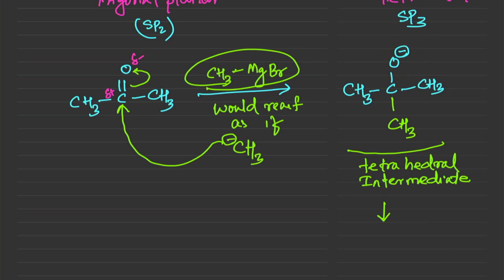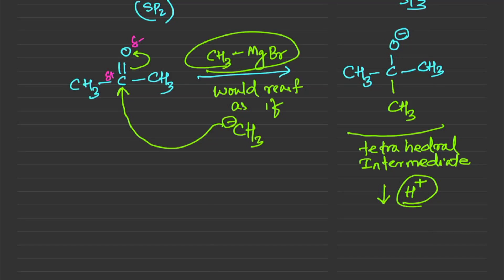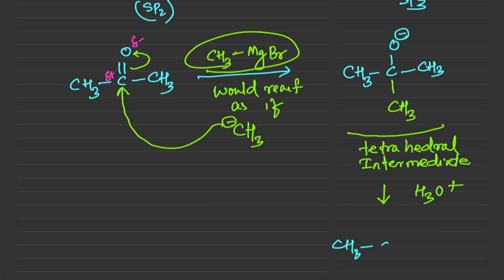All we have to do at this point is neutralize the negative charge by adding an extra proton. In exam questions this may be written as H⁺, H3O⁺, or just water — it doesn't matter, all you need to do is neutralize that negative charge. Our product is CH3-C(OH)-CH3.